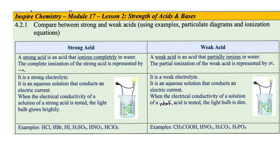In this learning objective we have to compare between strong and weak acids using examples, particulate diagrams and ionization equations. A strong acid is an acid that ionizes completely in water. The complete ionization of the strong acid is represented by a single-headed arrow. It's a strong electrolyte — an aqueous solution that conducts an electric current. When the electrical conductivity of a strong acid solution is tested, the light bulb glows brightly. These are some examples of strong acids that we have to know.